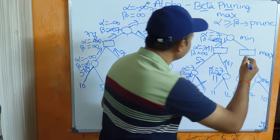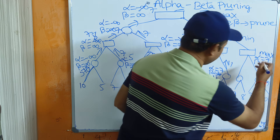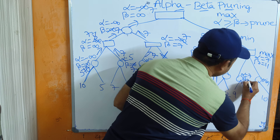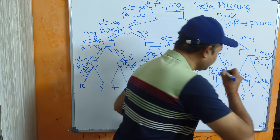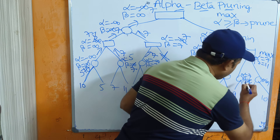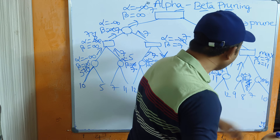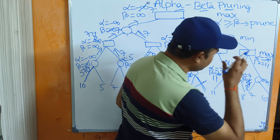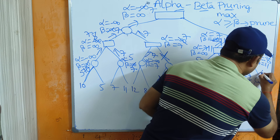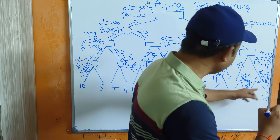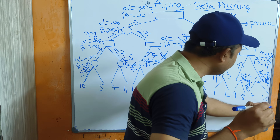The left path is over. Now traverse the right path with alpha = 7 and beta = 11. Pass that to the children. Out of 9 and 11, the smallest is 9, so replace beta with 9; then replace with 8. Back-propagating to the parent (max player), out of 7 and 8, the maximum is 8, so replace alpha with 8. Pass alpha = 8 and beta = 11 to the next children. Out of 11 and 7, the smallest is 7; out of 7 and 10, the smallest is 7.